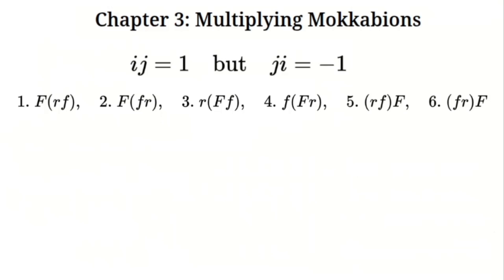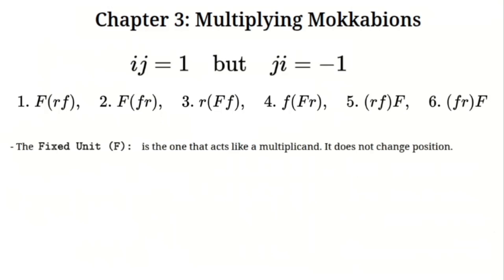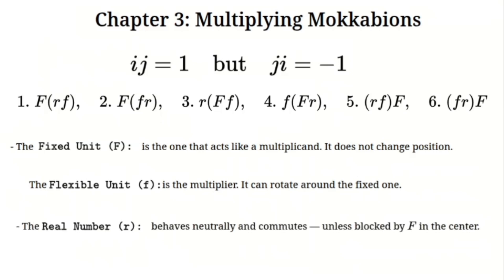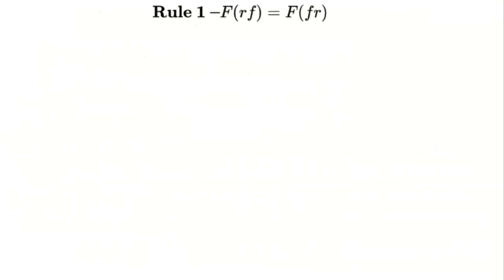The capital F acts like a multiplicand — it doesn't change position. Think of it as the anchor point in the multiplication process. The small f is the multiplier; it can rotate around the capital F, but its behavior depends on where the capital F is located. The real number behaves neutrally and commutes freely unless it's blocked by the capital F in the middle. Here's the first rule: r × small_f = F × small_f × r. When the capital F is on the left, the scalar r and the small f can rearrange freely before being multiplied by the capital F.